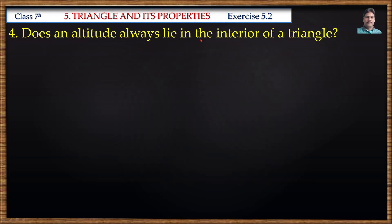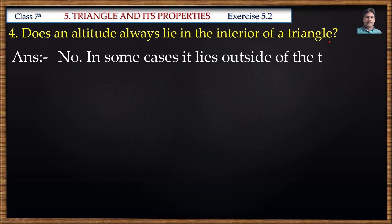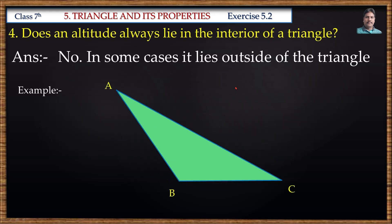Does an altitude always lie in the interior of the triangle? The answer is no. In some cases it lies outside the triangle. If we draw a perpendicular from vertex A to the opposite side BC, for example in an obtuse triangle ABC, the opposite side to vertex A is BC. If we draw a perpendicular from vertex A to BC, it will lie outside of the triangle. This perpendicular is the altitude for this triangle.